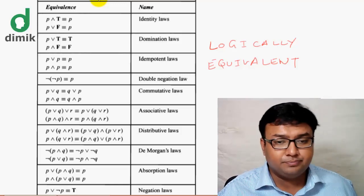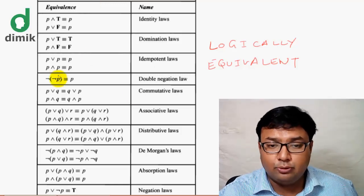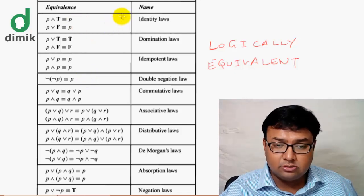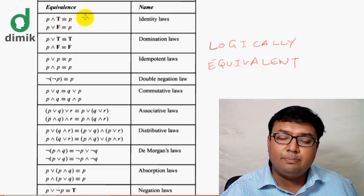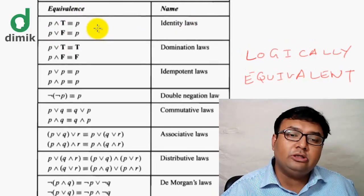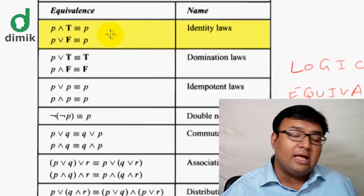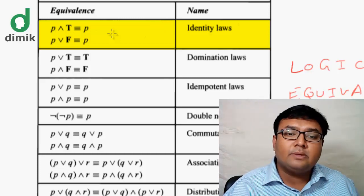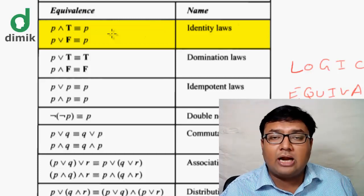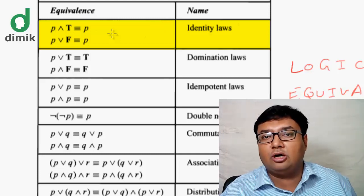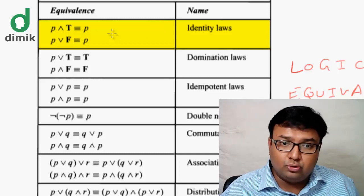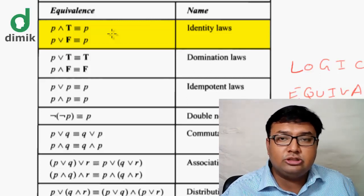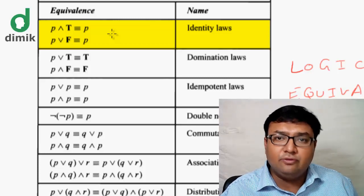Let's look at the table. The first logical equivalence is listed in pairs. The first rule is the Identity Law: P AND T is equivalent to P. Why? Because if P is true and T is true, the result is true; if P is false and T is true, the result is false — matching P exactly.